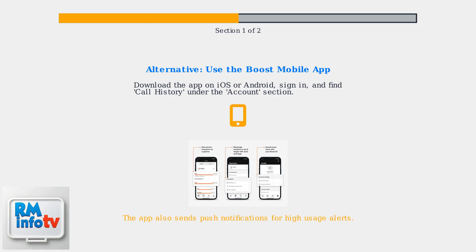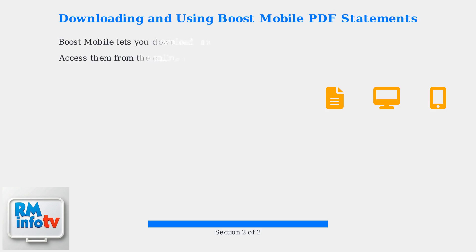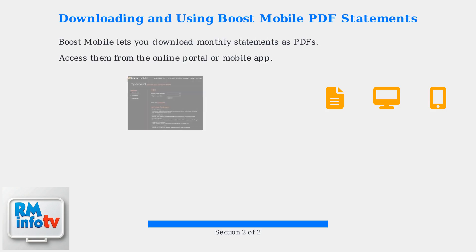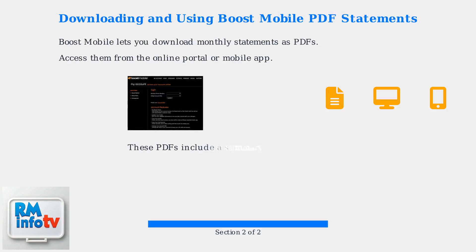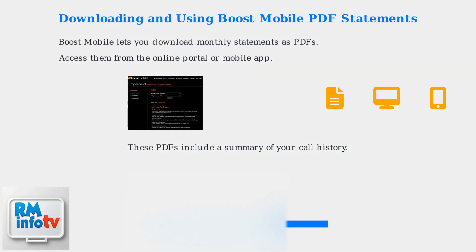The app also provides push notifications for high usage alerts. Boost Mobile lets you download monthly statements as PDFs. Access them directly from the online portal or mobile app. These statements include a summary of your call history.